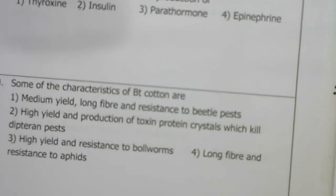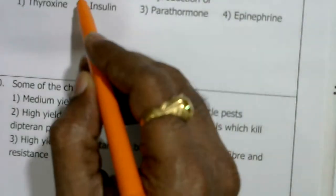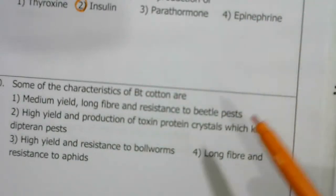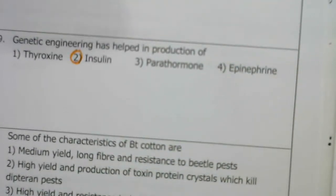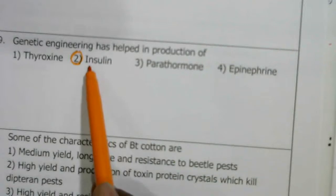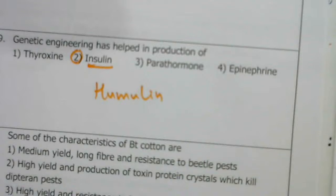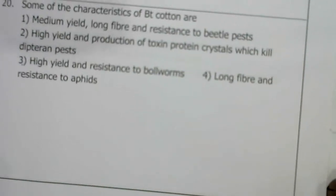Genetic engineering has helped in production of products of pharmaceutical value. Insulin was produced in 1983 by Eli Lilly. Thyroxine, epinephrine, and parathyroid hormone are produced by various glands as covered in endocrinology. But genetic engineering produced insulin, popularly known as humulin.